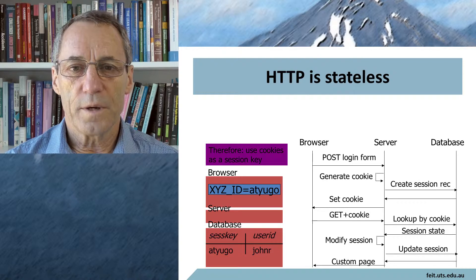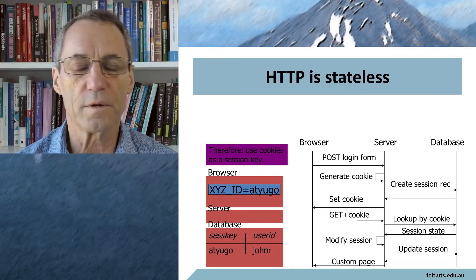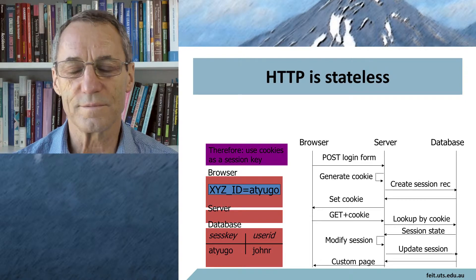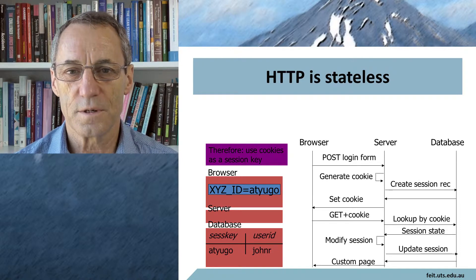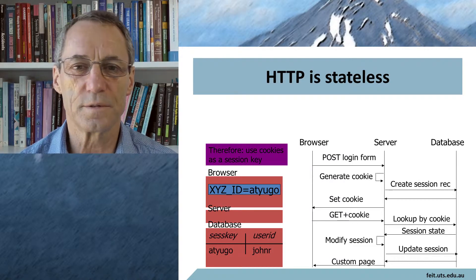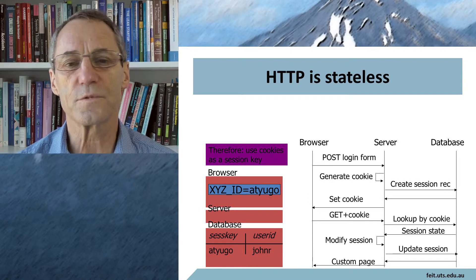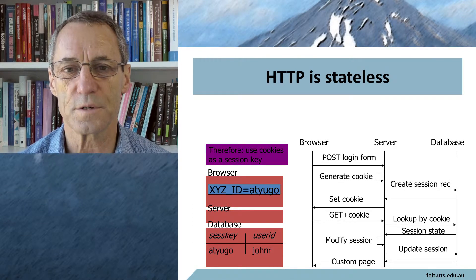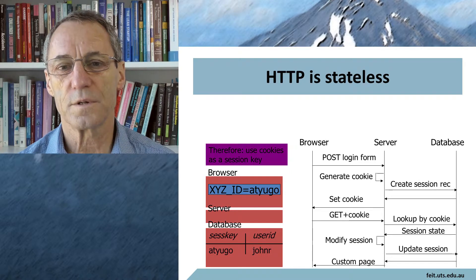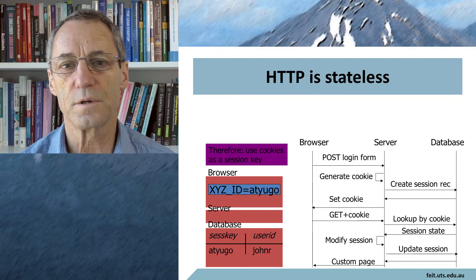Some of the design decisions made at the time — even in the original proposal, which is readily available and you can Google and download — included a couple of fairly significant choices. One was whether there should be security or not. Given that this was intended to be used in the scientific community, which was very open, it was considered that security was not necessary and would simply add a complication. So security was not implemented.